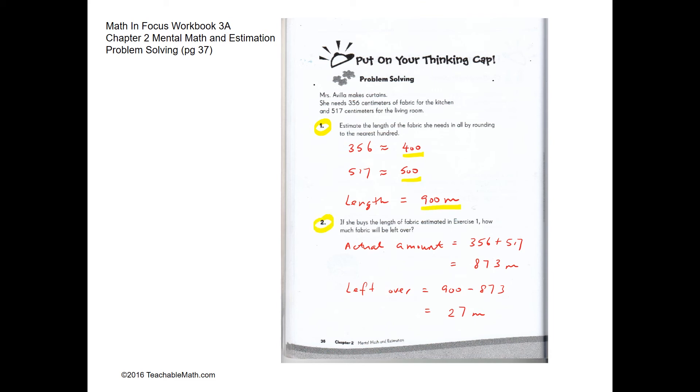Question two, if she buys the length of the fabric estimated in question one, how much fabric is left over? So the actual amount of fabric that she needs would be 873 meters. If she bought 900, the amount left would be 27.